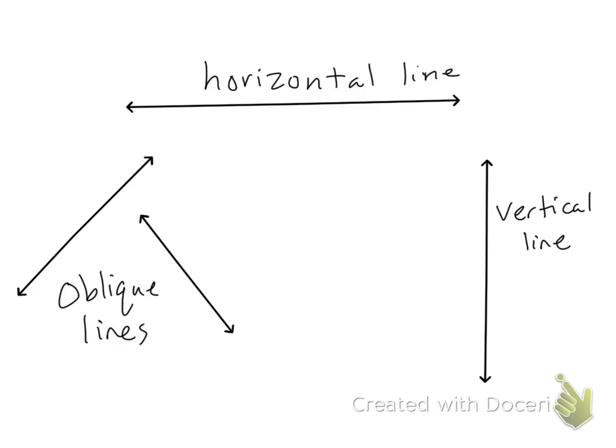So lines, rays, and segments can be horizontal, which means they go from left to right across the horizon. They can be vertical, which means they go up and down. Or they can be oblique. Oblique means that they're slanted. They go in any direction except for horizontal or vertical.